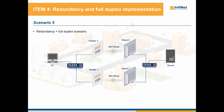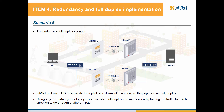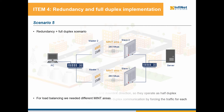Let's now use the same physical scenario and see what tricks can be done to achieve full duplex communication. As you know, our units use time division duplex or TDD for separating the uplink and downlink directions. This means that only one direction can transmit at a time, so their operation is half duplex. Using any redundancy topology, however, you can benefit of full duplex by forcing the traffic for each direction to go through a different path. We'll force the uplink traffic from the PC to the server to use the link between master 1 and slave 1, and the downlink traffic will be forced to use the radio link between master 2 and slave 2. For load balancing, we need different mint areas. Each radio link is a different mint area in this case, as load balancing does not work for joint interfaces that are part of the same mint area.